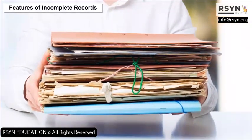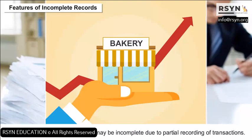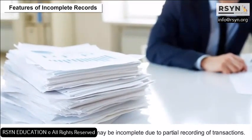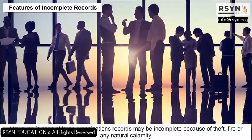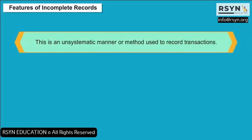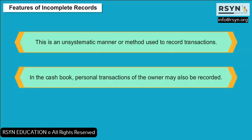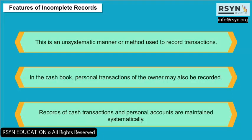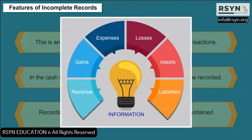In case of small firms, records may be incomplete due to partial recording of transactions. However, in case of large organizations, records may be incomplete because of theft, fire, or any natural calamity. Features include: it is an unsystematic manner used to record transactions. In the cash book, personal transactions of the owner may also be recorded. Records of cash transactions and personal accounts are maintained systematically. However, no proper information is available regarding revenue, gains, expenses, losses, assets, and liabilities.